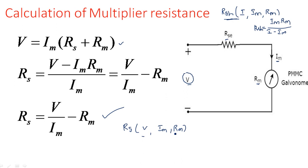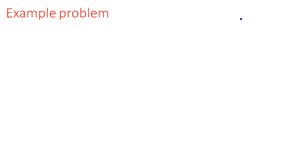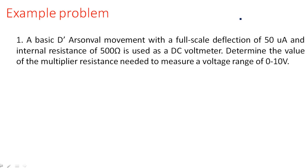The values IM and RM are the same in both cases, but for the voltmeter the unknown is voltage V, whereas for the ammeter the unknown is current I. This is the key difference between shunt resistance and series (multiplier) resistance calculation.